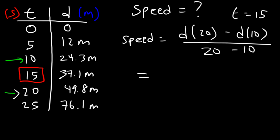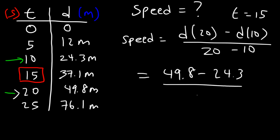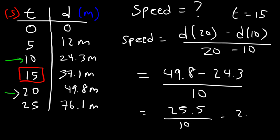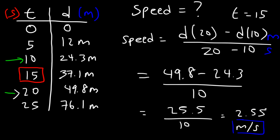So now let's get the answer. The distance at t equals 20 is 49.8 and the distance at t equals 10 is 24.3. 20 minus 10 is 10. 49.8 minus 24.3 is 25.5, and dividing by 10 gives 2.55 meters per second. Distance was on top in meters and time on the bottom in seconds, so you get speed in meters per second. The instantaneous speed is approximately 2.55 meters per second.